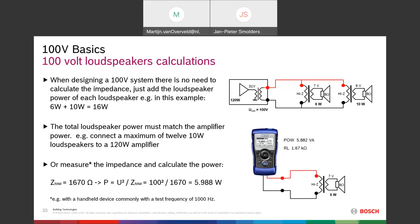If you measure 1670 ohm on a loudspeaker line, the total power connected on that line is 100² ÷ 1670 ≈ 6W. So it is very easy to calculate or measure — you instantly know the power connected to a loudspeaker line.